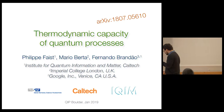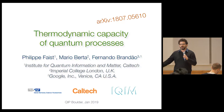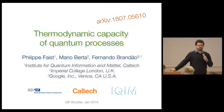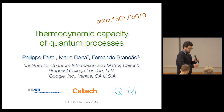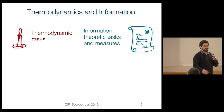This talk is about another variation on the work cost of processes in quantum thermodynamics and new relations to information measures. I'll get into more detail about what this thermodynamic capacity actually is in a moment. This is my mandatory slide about thermodynamics and information. We've already heard some very nice talks this morning by Alpero and Carlo, so I will be brief.